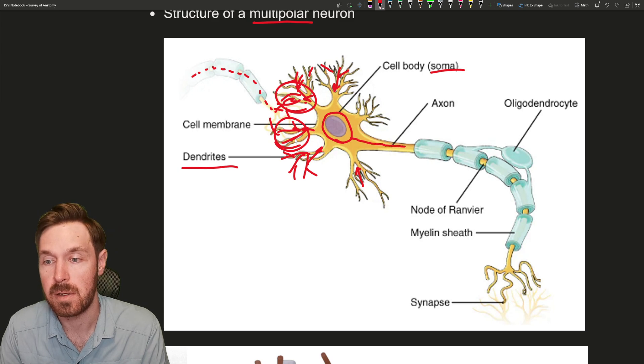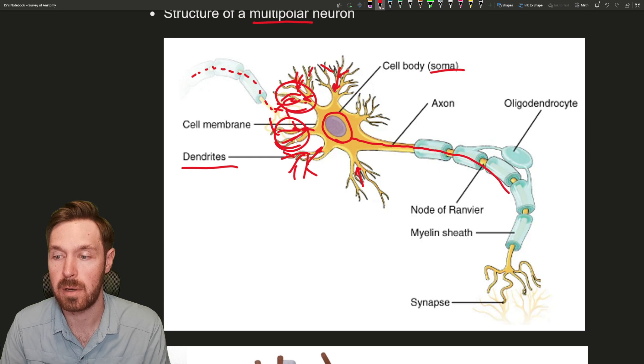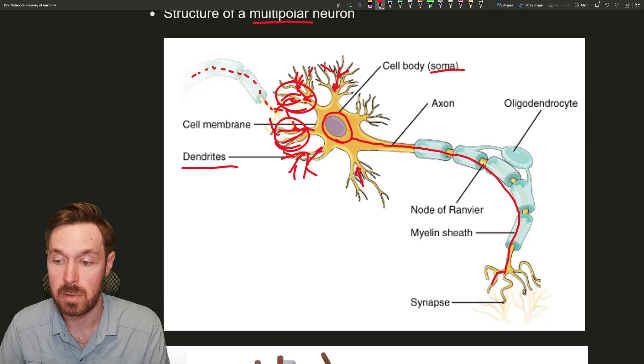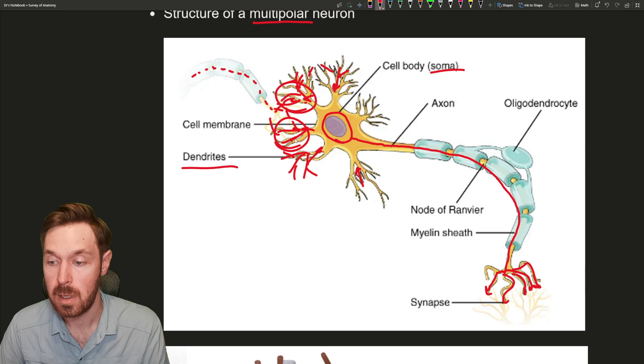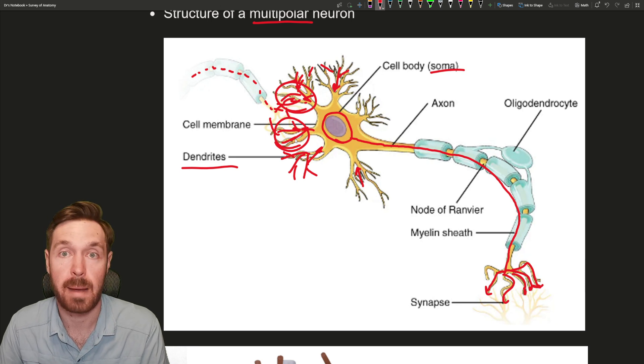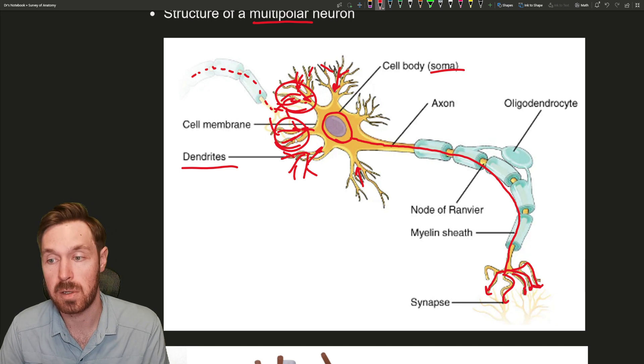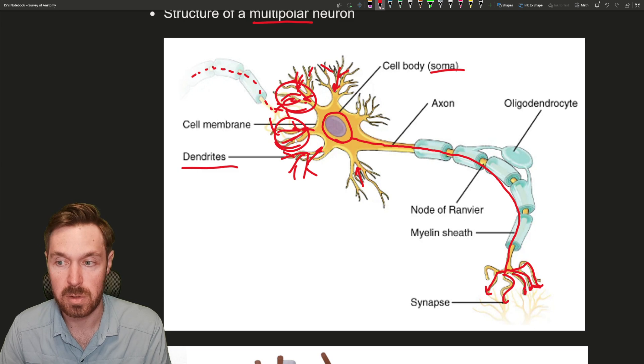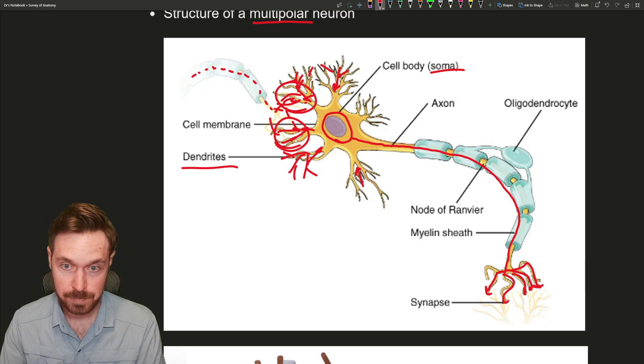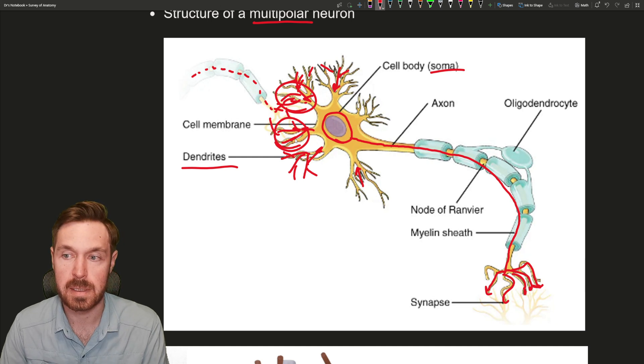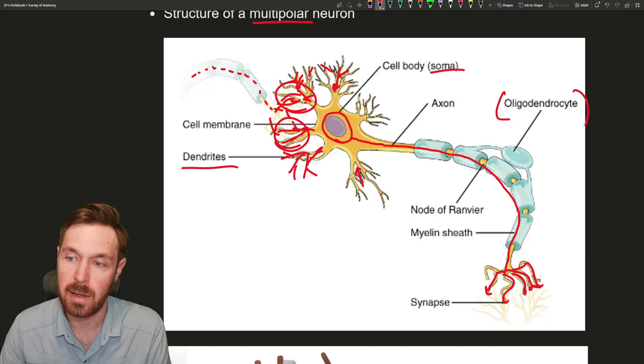Then those signals, if they reach threshold, which we'll go over in the next video, fire what's called an action potential that travels down this structure here called an axon, runs all the way down that axon, and then goes to these axon terminals and then synapses with maybe the next neuron or maybe it could synapse with your muscle at the neuromuscular junction and lead to that muscle contraction.